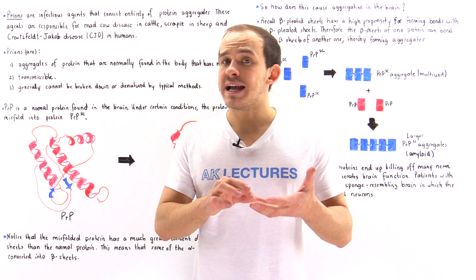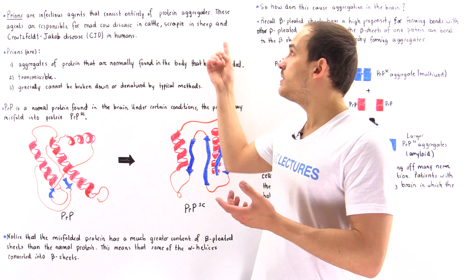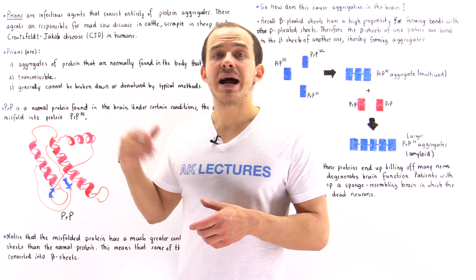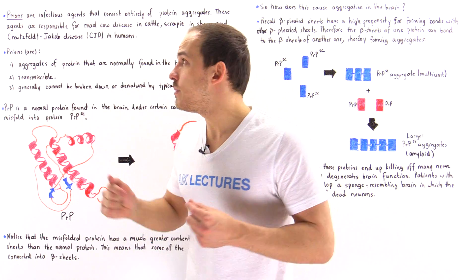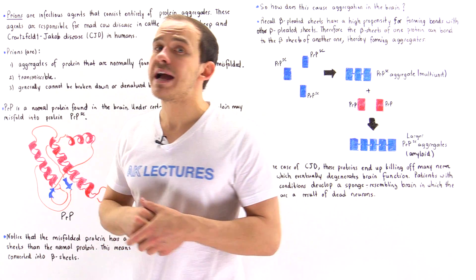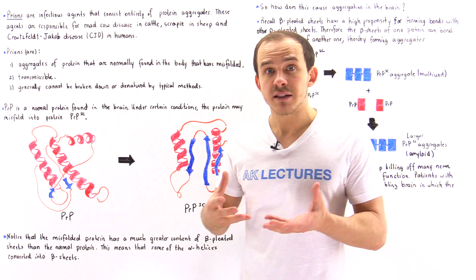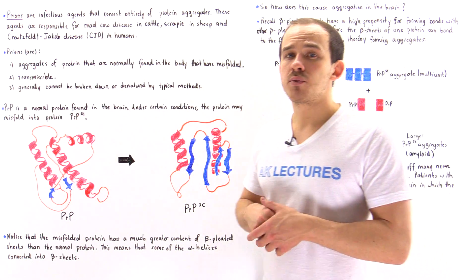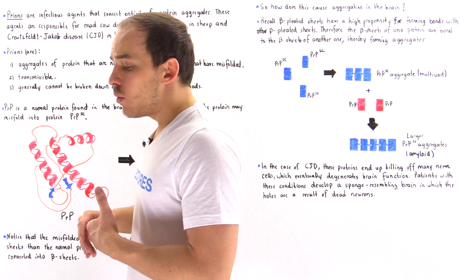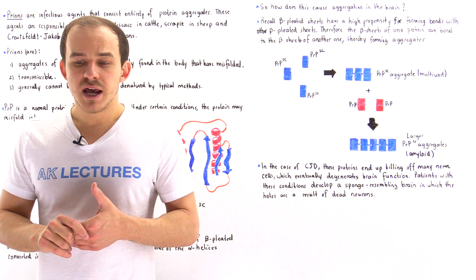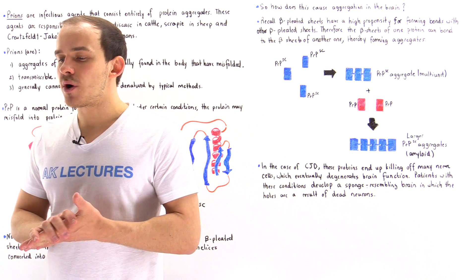For example, mad cow disease in cattle and scrapie in sheep are caused by prion molecules. In fact, in humans, a disease known as Creutzfeldt-Jakob disease (CJD), which is a deadly disease, is caused by prion molecules. So what exactly is a prion and what are some properties of prions?